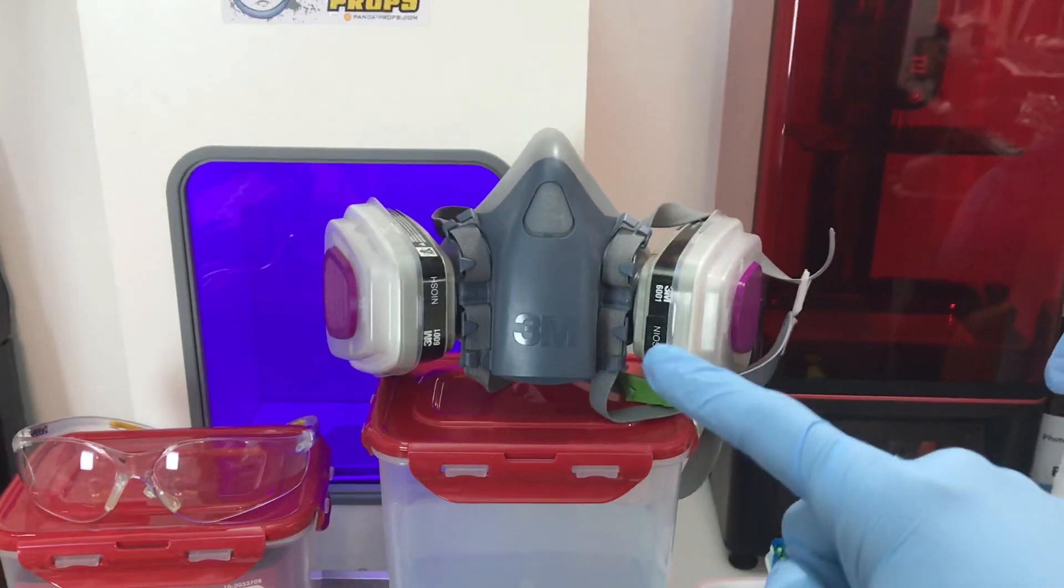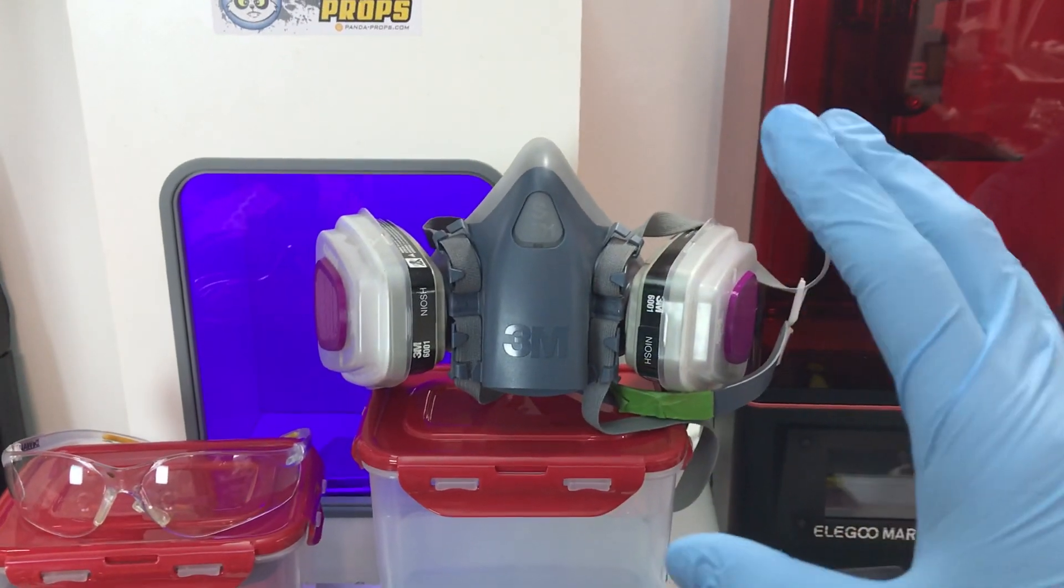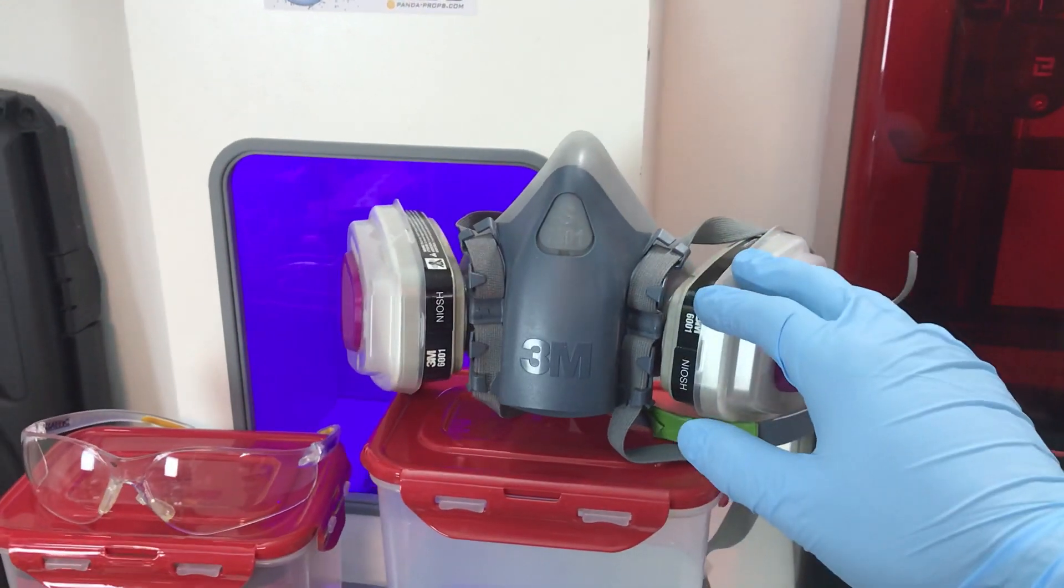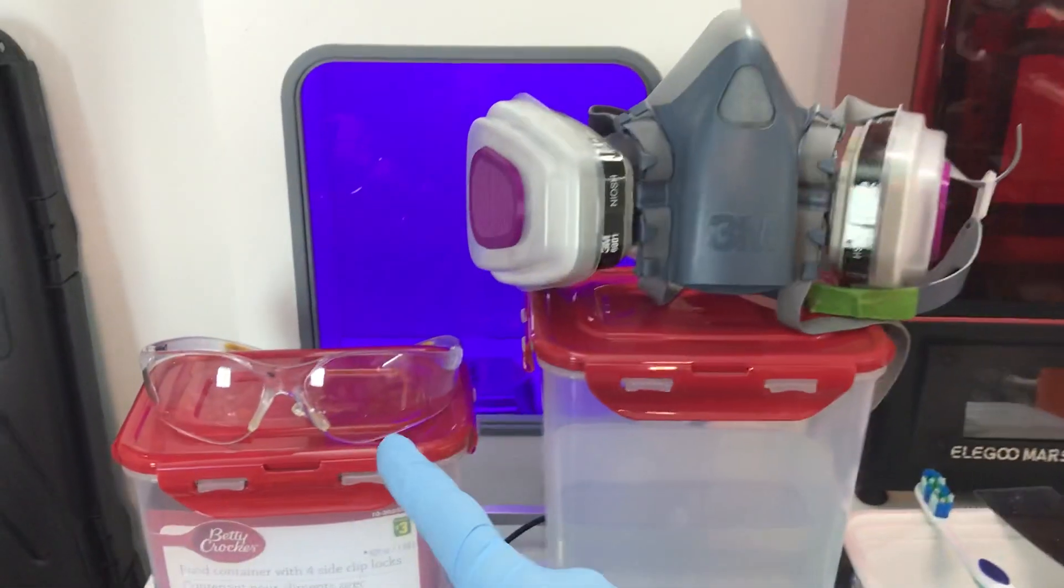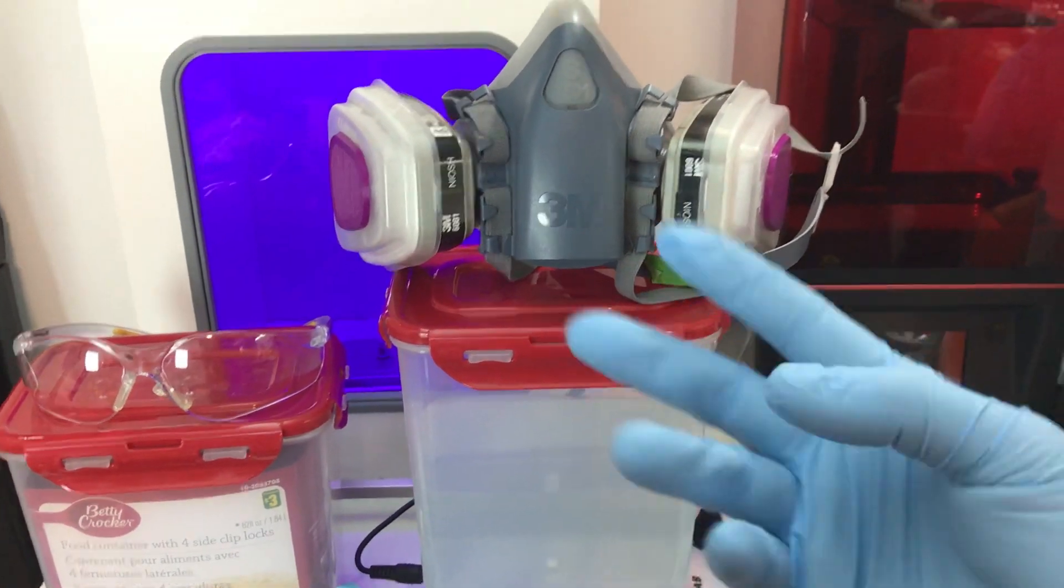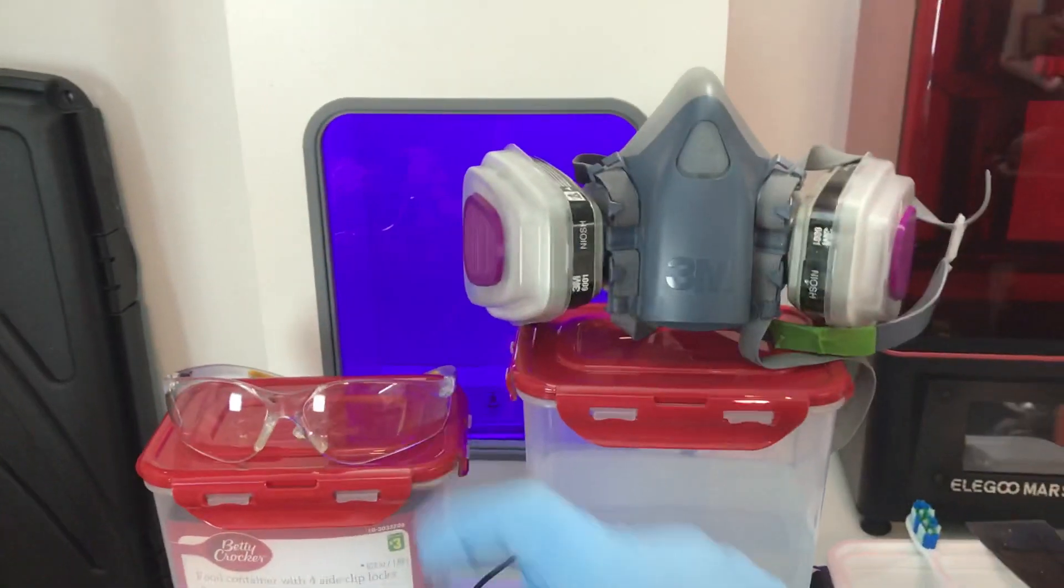A respirator—even if you're in a well-ventilated room, it's good to have a NIOSH-approved respirator for fumes. That's just a good safety precaution. And glasses: when you're washing your prints, sometimes if you're using IPA, it can splash up into your face, so glasses for safety.